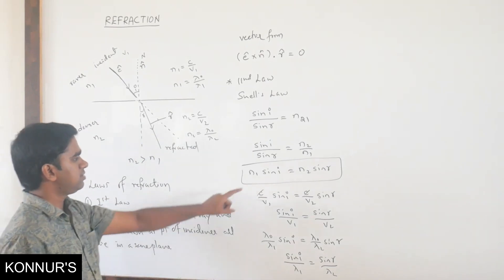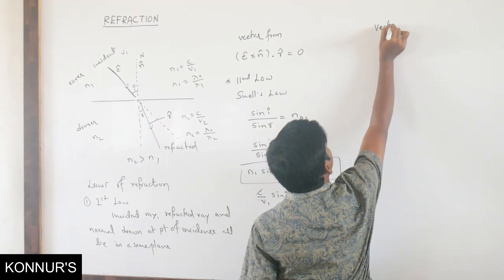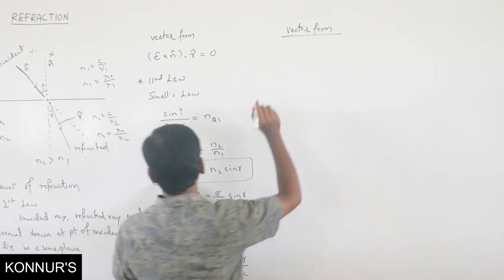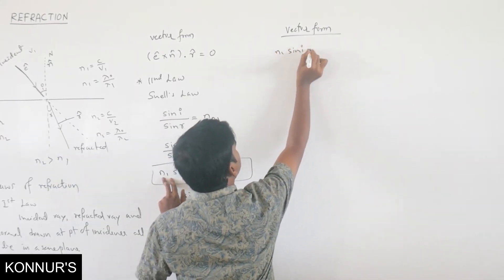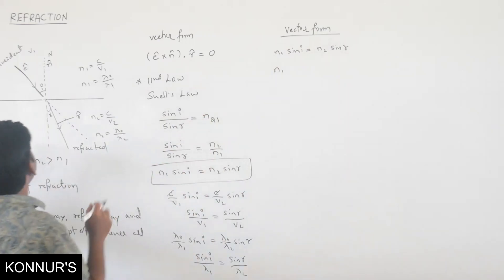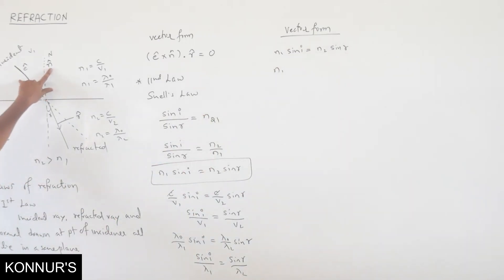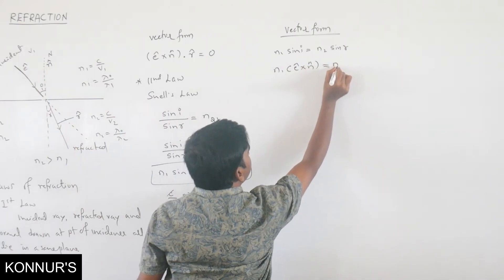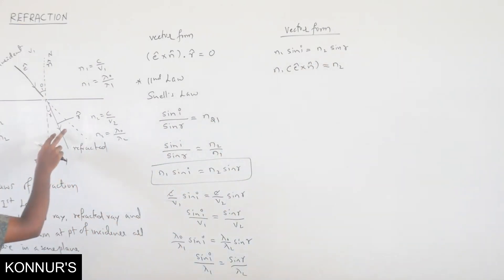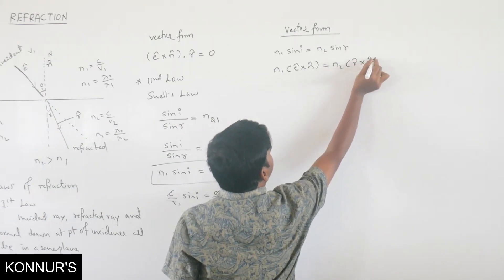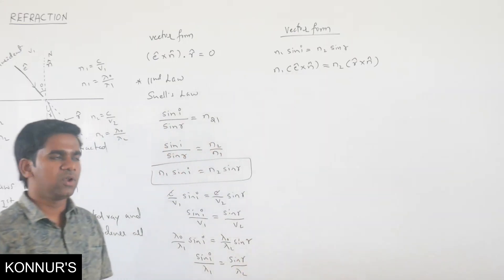The vector form of Snell's law: since sin I is the angle between E-cap and N-cap, we can write N1 (E-cap × N-cap) = N2 (R-cap × N-cap), where R-cap is the unit vector of the refracted ray and N-cap is the normal. This is the vector form of the second law of refraction.